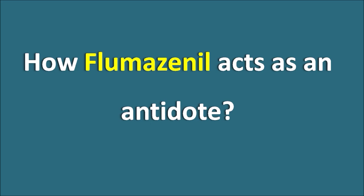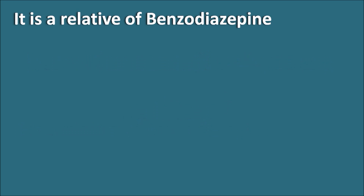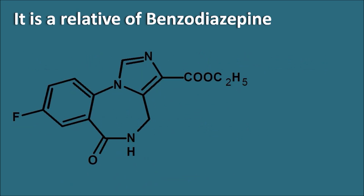How does Flumazenil act as an antidote? Flumazenil is a relative of the benzodiazepine and we can find the structure of Flumazenil as like this.